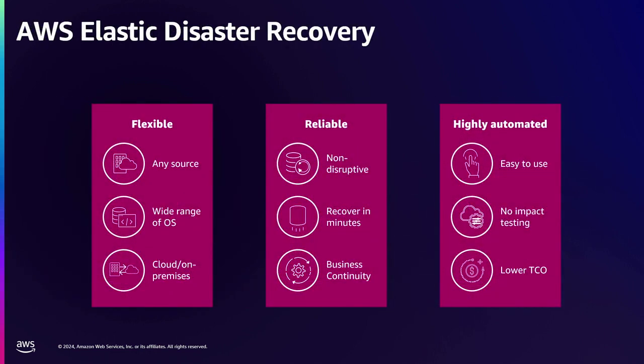AWS has multiple options to cover disaster recovery — we have AWS Backup — but today we're going to cover Elastic Disaster Recovery, or DRS for short. DRS is applicable for on-prem, hybrid, and other clouds. You don't necessarily need to be running on AWS. That's one of the good features — that's the beauty of it.